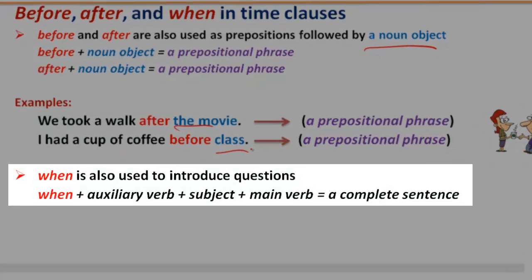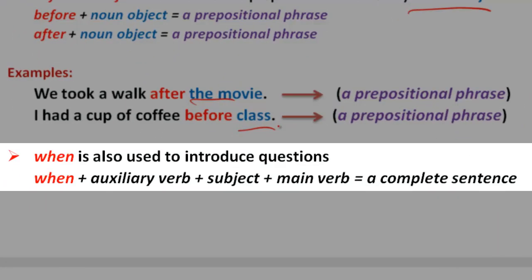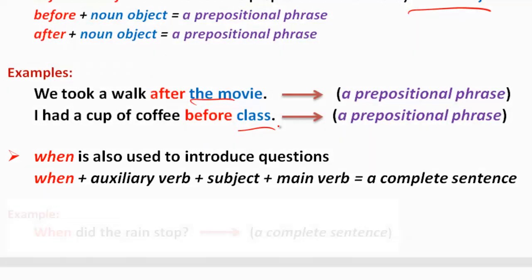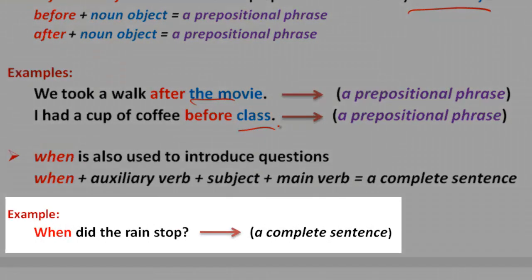When is also used to introduce questions. When plus auxiliary verb plus subject plus main verb equals a complete sentence when introducing a question. When did the rain stop? A complete sentence.